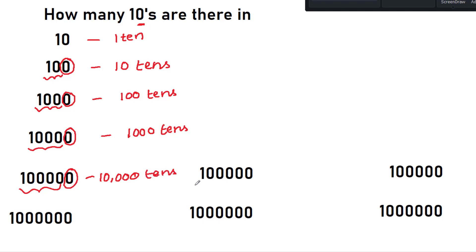If you are writing this with the comma format of the Indian number system, we will learn this as 1 lakh. How many tens are there in 1 lakh? It is very simple — you just leave the last zero and read what the remaining number is: it is 10,000. So you write 10,000 tens. Same way, if you are splitting like the international number system, that is 100,000. How many tens are there in 100,000? You just leave this zero and write 10,000 tens — it is the same answer.